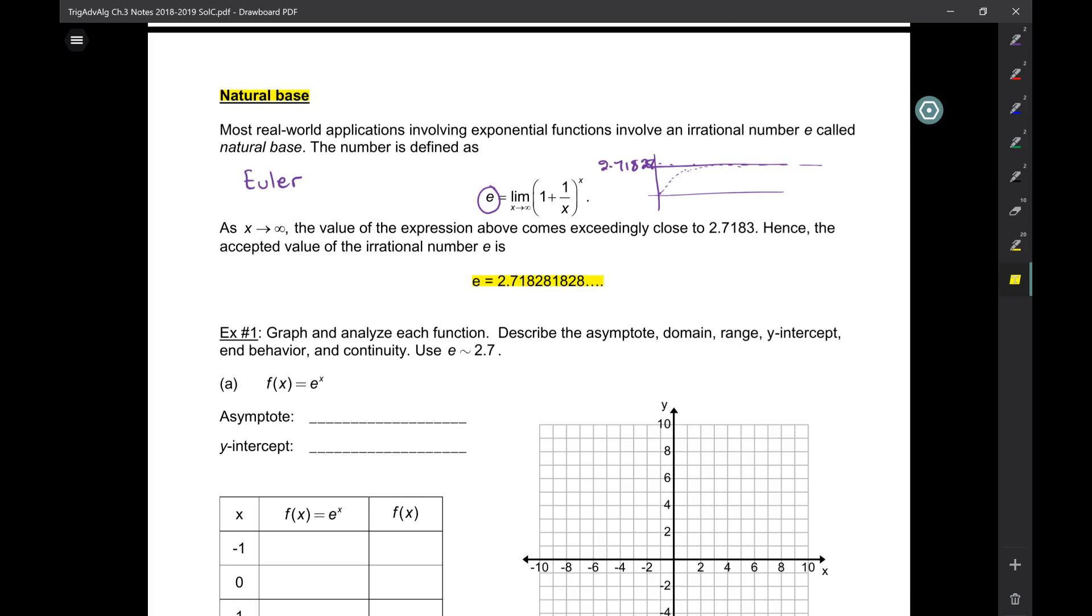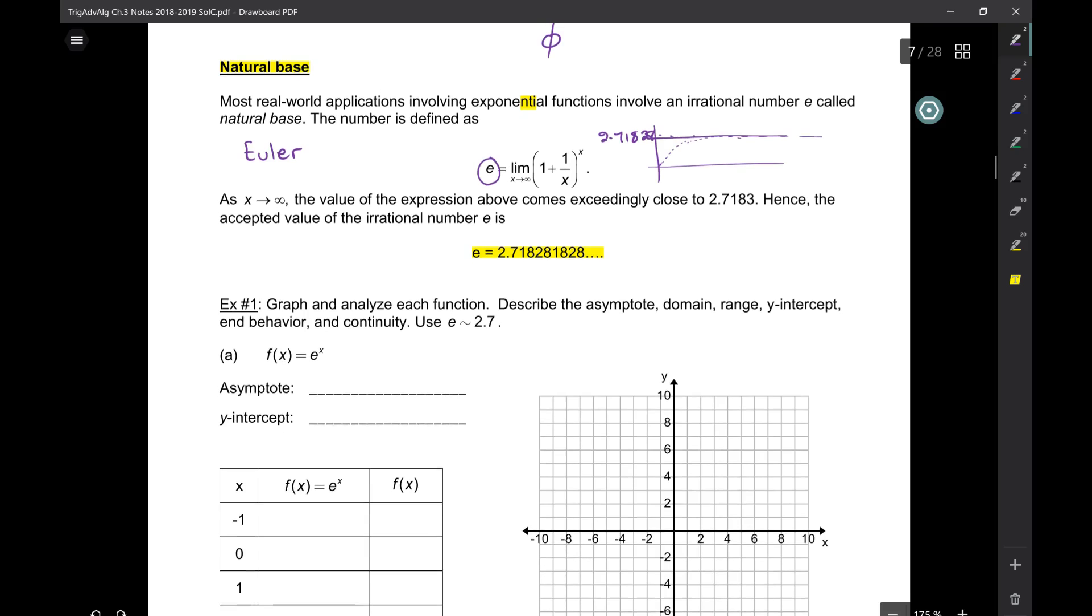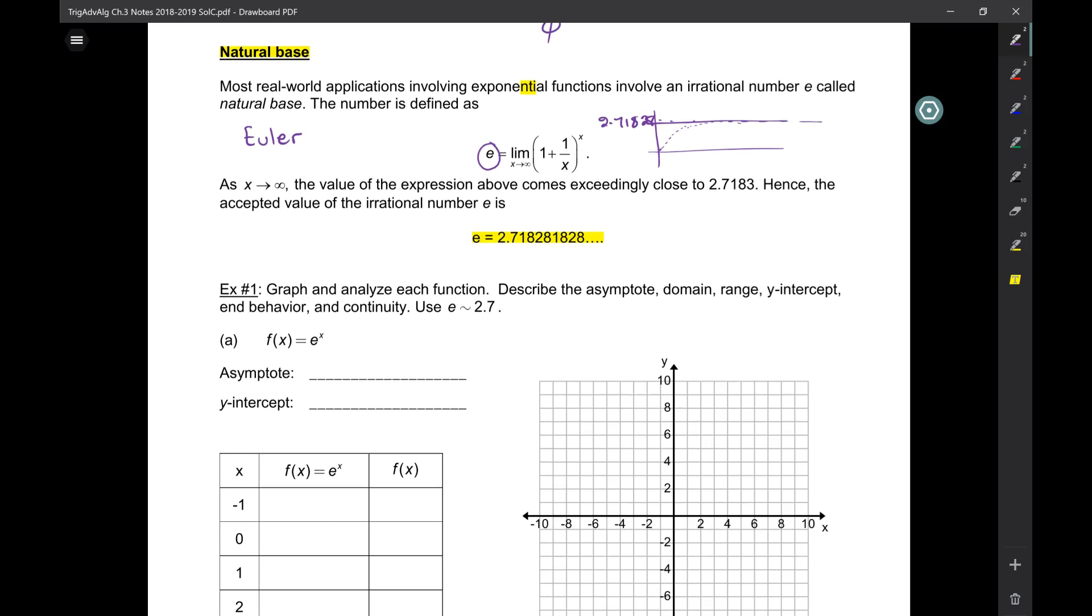There are three constants like that: pi, e, and phi. Phi we don't really get to in high school, but e and pi we definitely do.